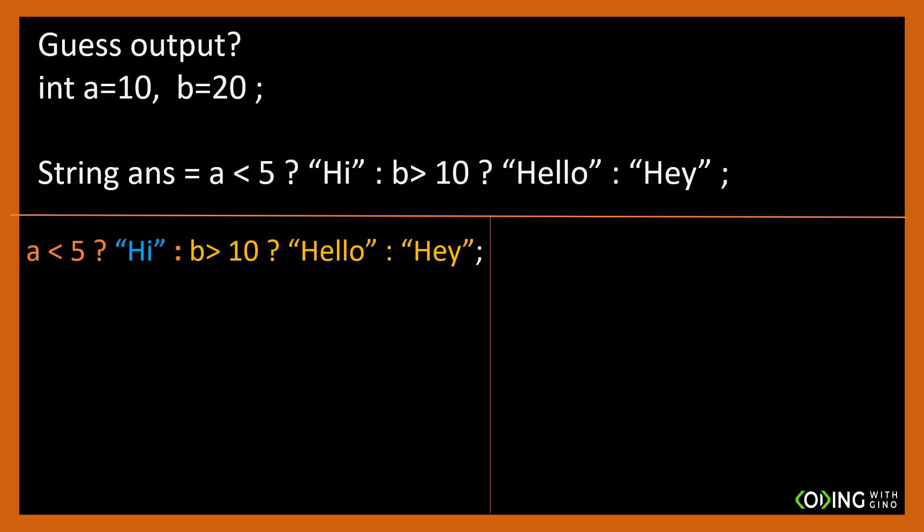First, check how many question marks there are. For every question mark, there should be a corresponding colon present. If not, code will not compile. We can see two pairs of question marks and colons. This means there are two conditions being checked. First condition says, if a less than 5 is true, then print hi. If not, execute everything on the right side of the first colon.